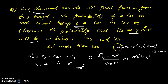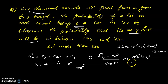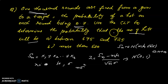We call Sn the sum of the random variables. Here the random variable X represents the number of hits, and Sn is the sum of the random variables X1, X2, ..., Xn.